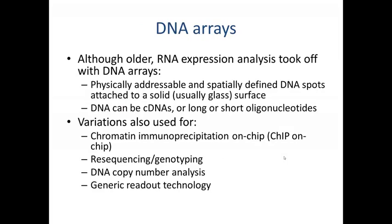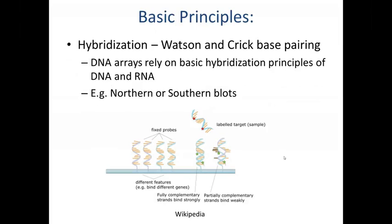Traditionally, DNA arrays have been used to understand the transcriptome. RNA expression analysis is older than DNA arrays but really took off with DNA arrays in the late 90s and early 2000s. The big advantage DNA arrays had was that they were physically addressable and spatially defined. Most of these DNAs could be cDNAs or short or long oligonucleotides. DNA arrays are also used for things other than RNA expression analysis — for example, chromatin immunoprecipitation on chip, resequencing or genotyping to find SNPs, DNA copy number analysis, and as a generic readout technology.